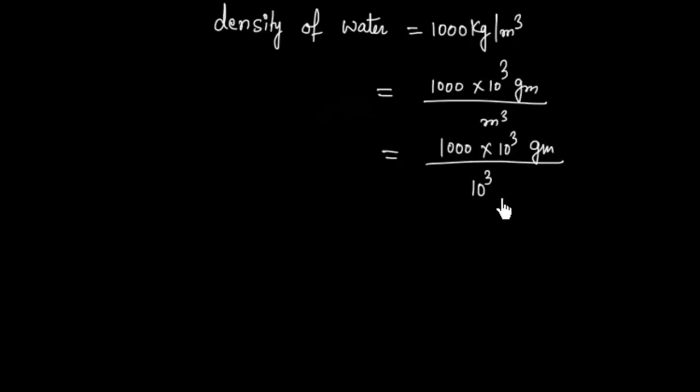1 meter cube is 10 to the power 3 liters. So we will have 1000 grams per liter.